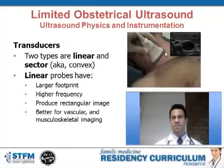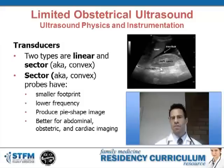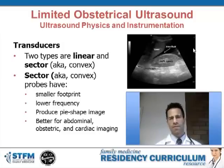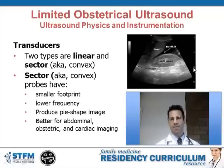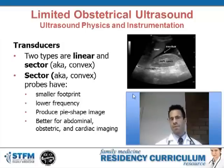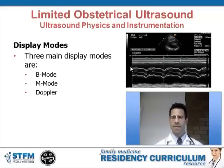Demonstrated in this picture is ultrasound-guided cannulation of the internal jugular vein. The other type — the sector or convex probe — has a smaller footprint, typically uses a lower frequency, and creates a pie-shaped or sector-shaped image rather than a rectangular one. The convex probe is better for abdominal, obstetric, and cardiac imaging, where a smaller footprint is needed and you need to image deeper.